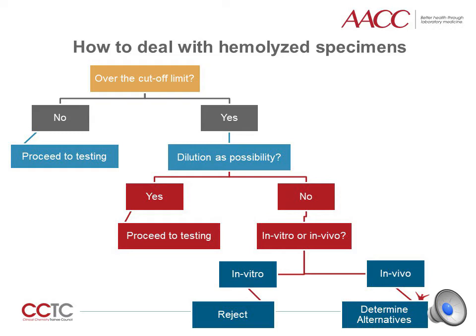In instances of in vitro hemolysis, the specimen should be rejected and the clinical staff ought to be notified to recollect the sample properly. In instances of in vivo hemolysis, the clinical staff ought to be notified and the underlying pathology should be addressed first. As a lab professional, you can also recommend alternative testing. For example, you can recommend measurement of ALT as opposed to AST to help evaluate liver function.